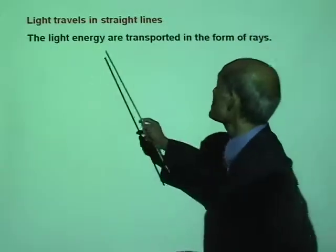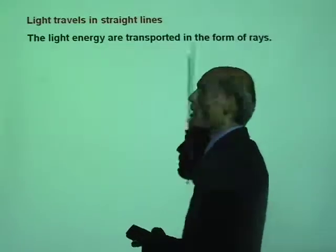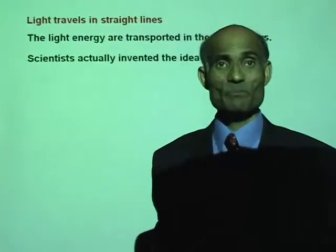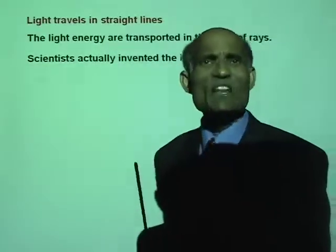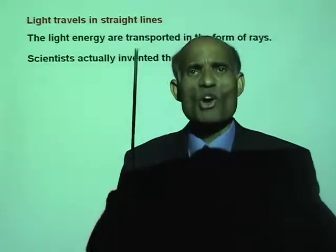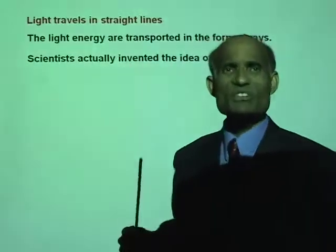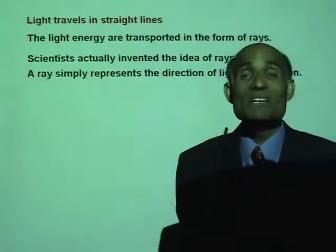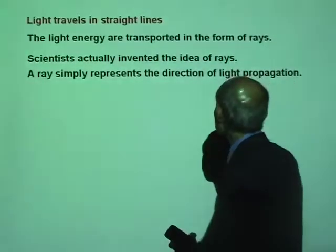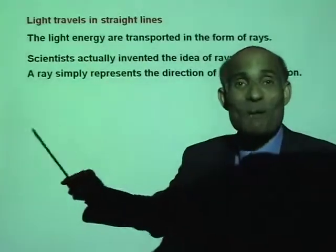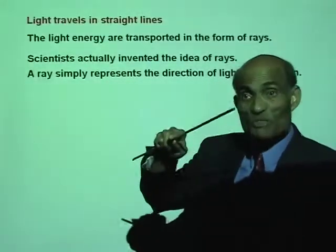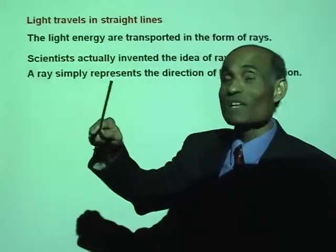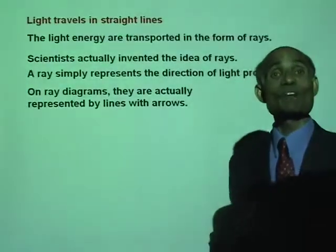Light energy is transported in the form of rays. What is a light ray? There isn't anything called a light ray — this is all our invention. Scientists invented the idea of light rays. A ray simply represents the direction of light propagation — the direction in which light moves, indicated by drawing a line with an arrow.